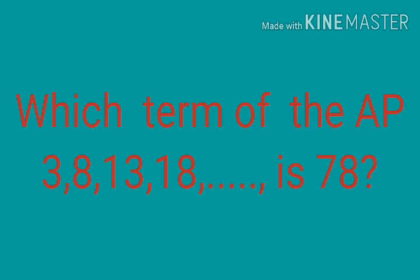Which term of the AP 3, 8, 13, 18, etc. is 78? Which term of the AP means we need to find the value of N. Here the AP is given, then we can find the value of A and value of D. Then which term of the AP is 78 means the Nth term will be 78.